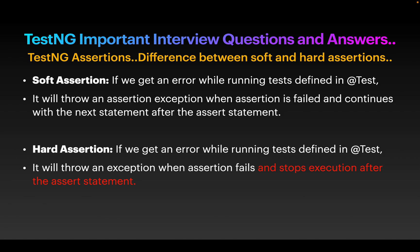Next question: what are the TestNG assertions you are using, and what is the difference between soft and hard assertion? Assertions are used to verify that the expected result and actual result are equal. Soft assertion: if you get an error while running your @Test method, the assertion error will be thrown but the test will still keep on continuing to the next statement. Hard assertion: the test will stop execution immediately after the assertion error is thrown. That is the main difference — soft assertion continues executing whereas hard assertion stops.